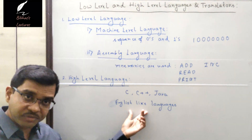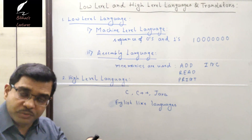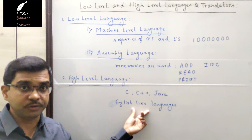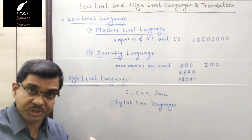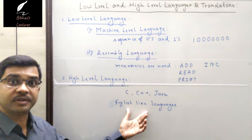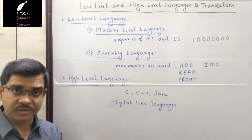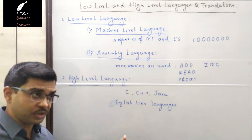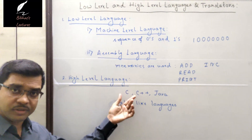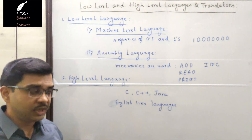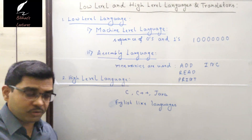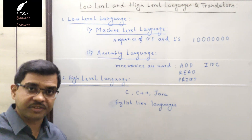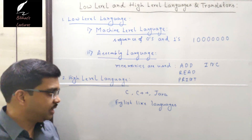Programs written in English-like languages are very much understandable by human beings, but they are not understandable by the machine at all, so they need to be converted to the corresponding machine code. Some translators are required — compilers and interpreters are different types of translators which can convert source code written in any specific language to its corresponding machine level language. Since translators are needed, it is a bit slow, but the main advantage is it is very understandable by human beings.